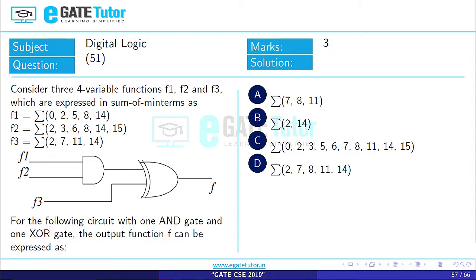Question 51 is asked from subject Digital Logic. Consider three 4-variable functions F1, F2 and F3.